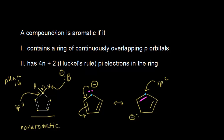Now we have a ring of continuously overlapping p orbitals. The four carbons we already identified are sp2 hybridized, and considering all resonance structures, all carbons in the ring are now sp2 hybridized. So we fulfill the first criteria — a ring of continuously overlapping p orbitals.